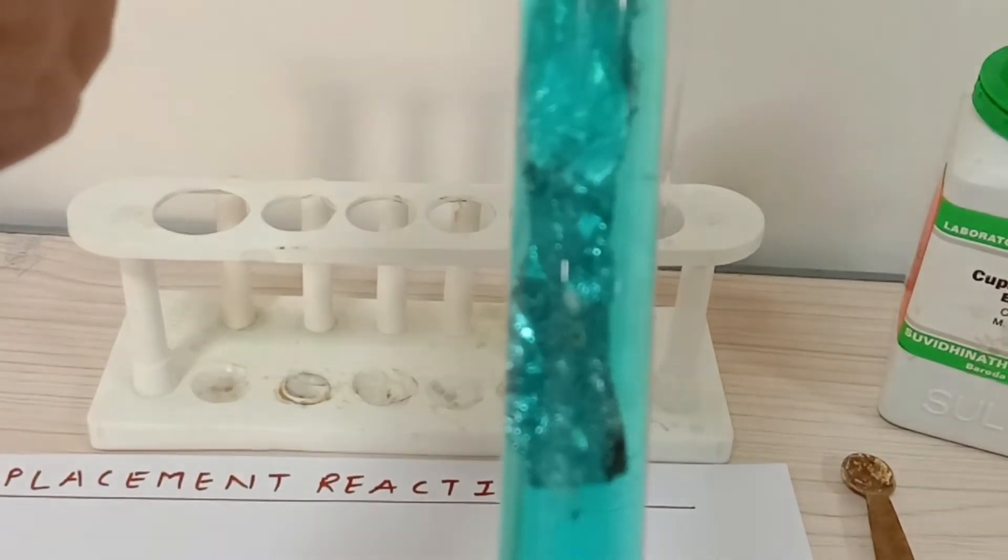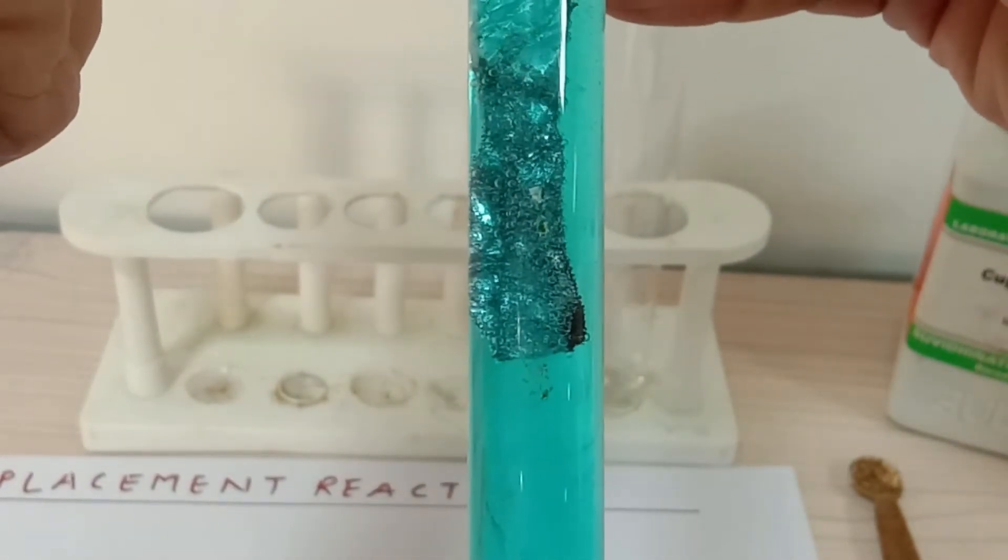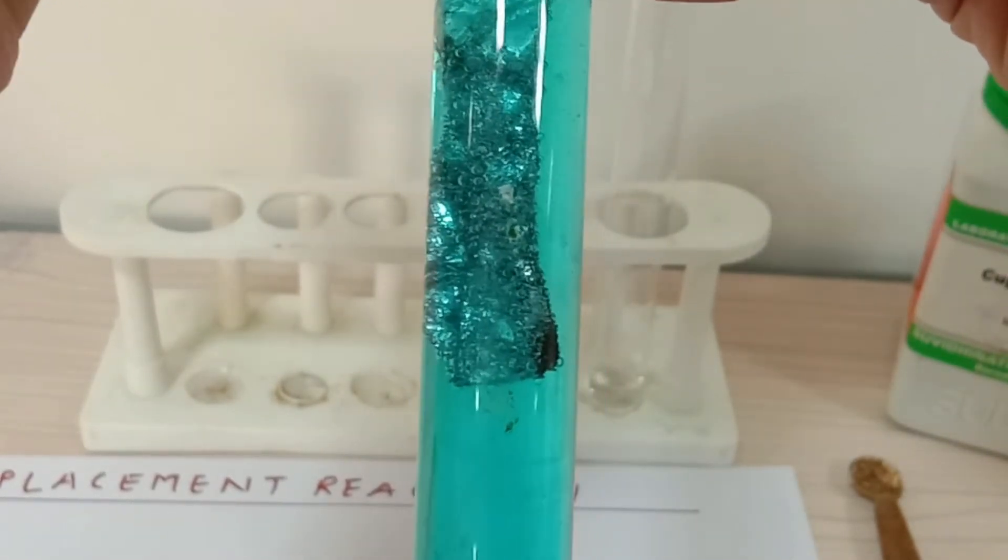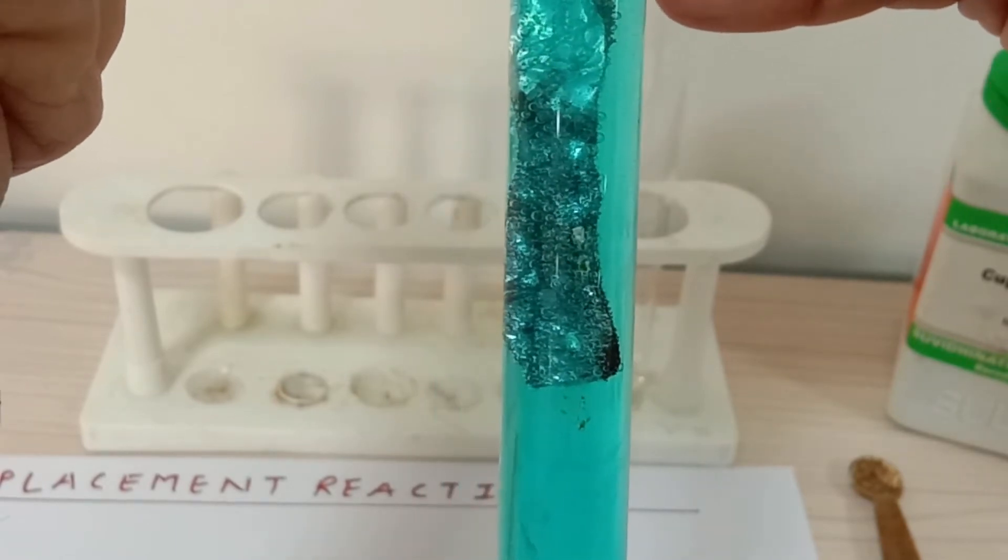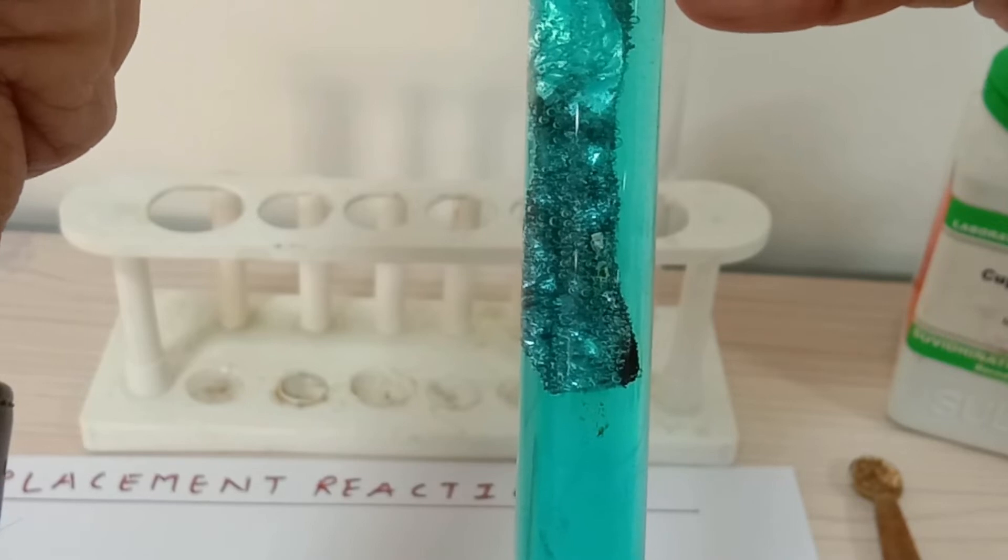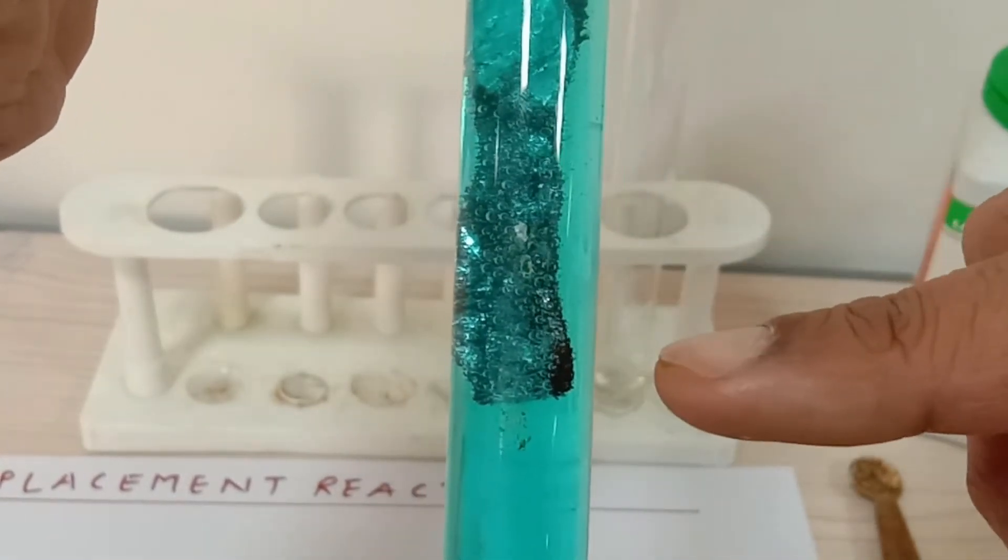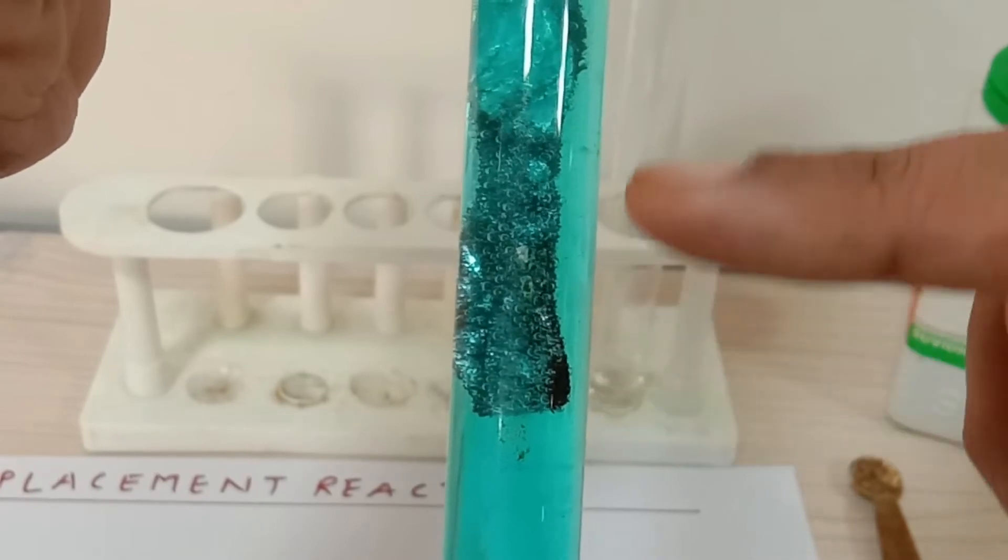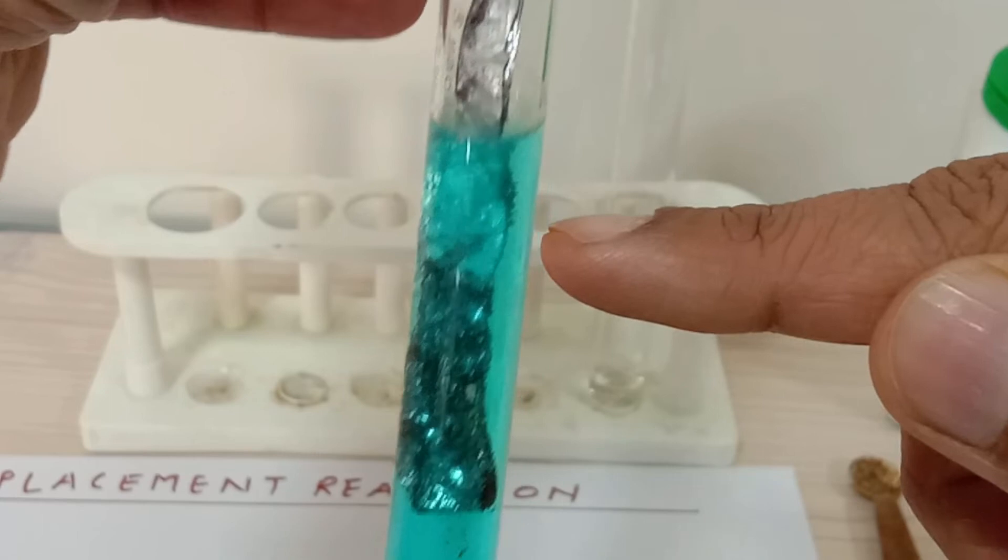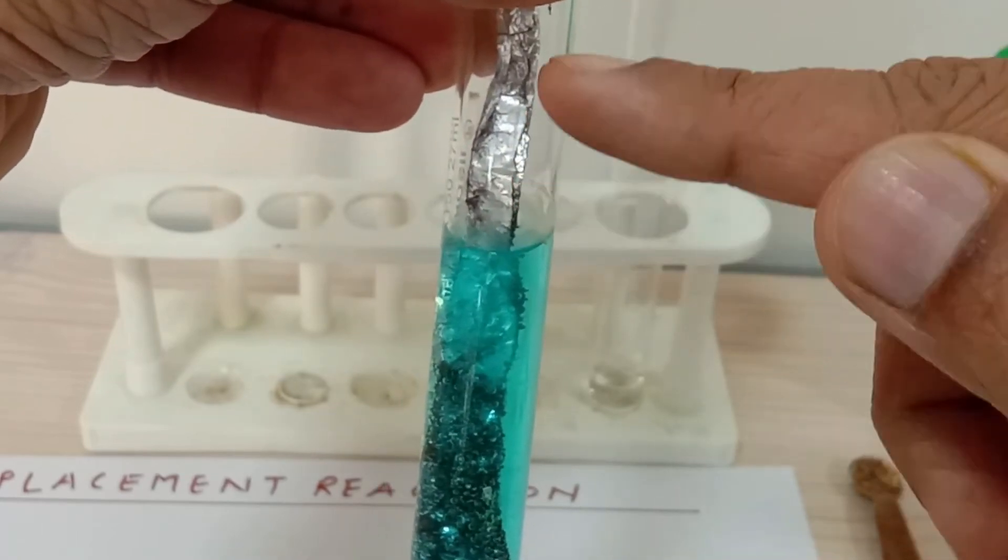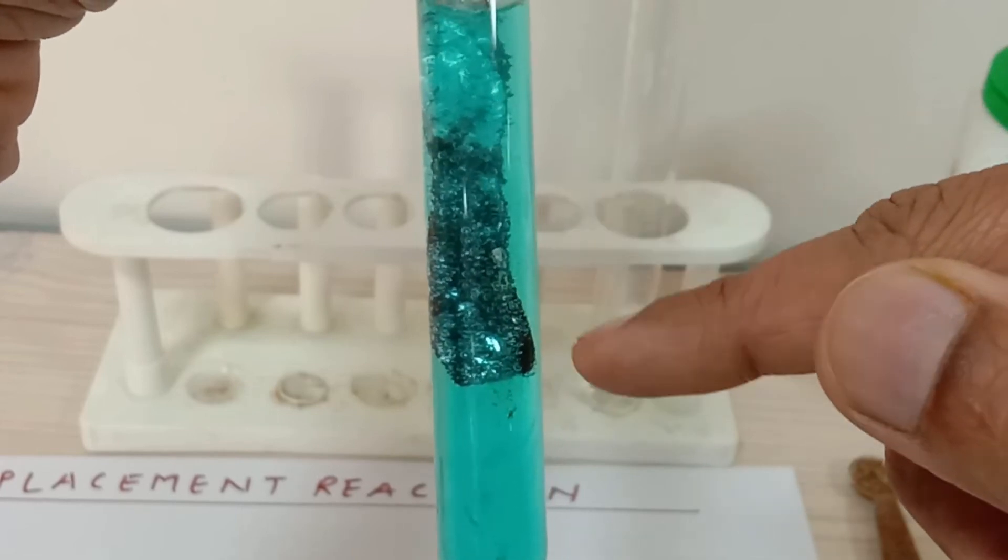The reaction has started to happen and you can see the formation of bubbles. The displacement has already started taking place. You can see here the copper has started to deposit on the surface of the aluminum foil, and you can clearly see the color change on the top part and the immersed part of the aluminum foil.